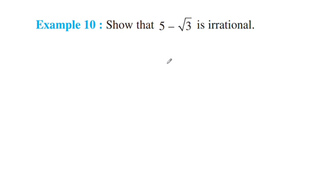We are going to use a proof by contradiction technique. We assume that the statement is wrong and work with 5 minus root 3.